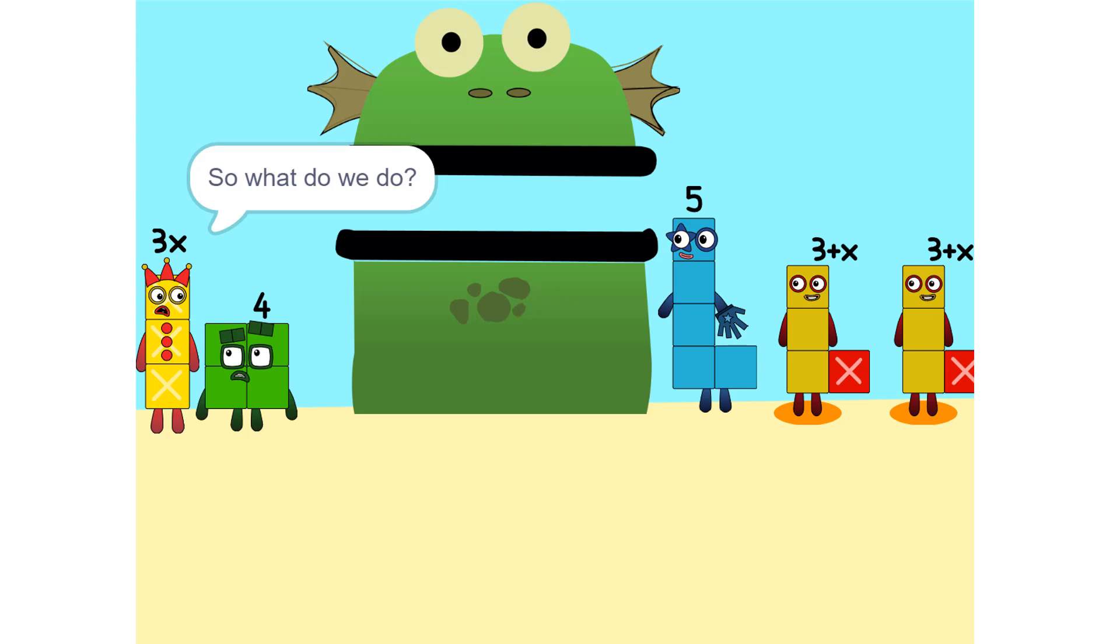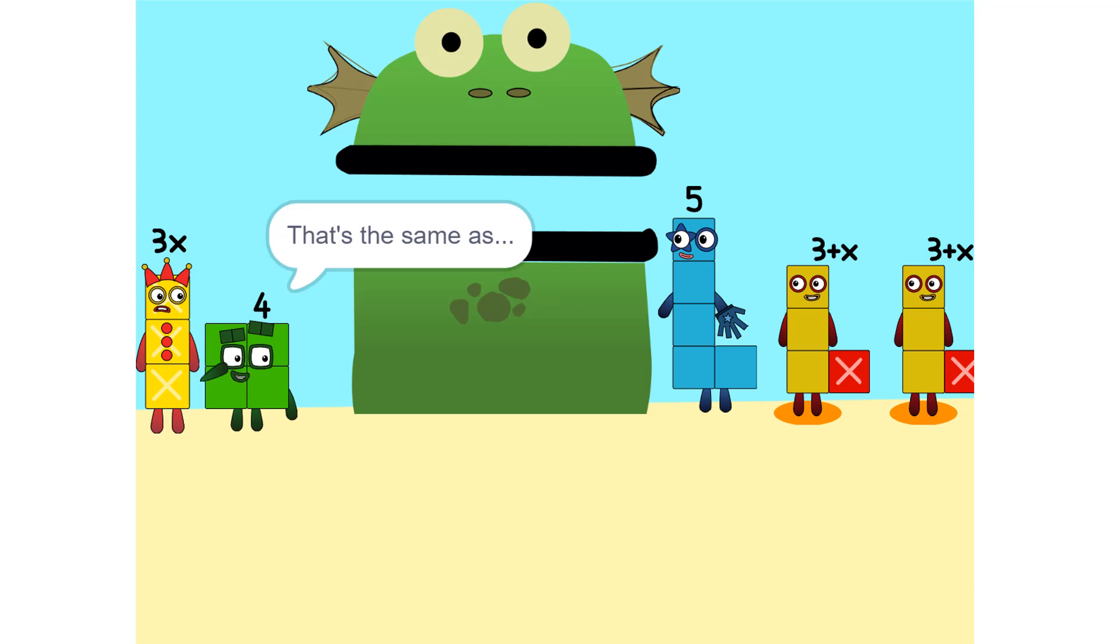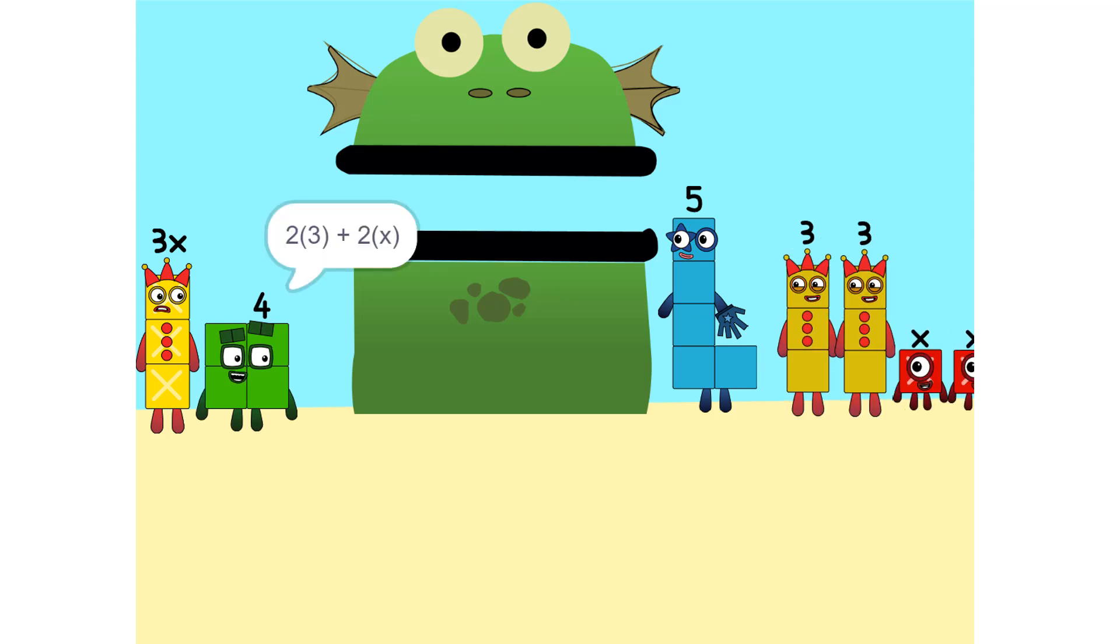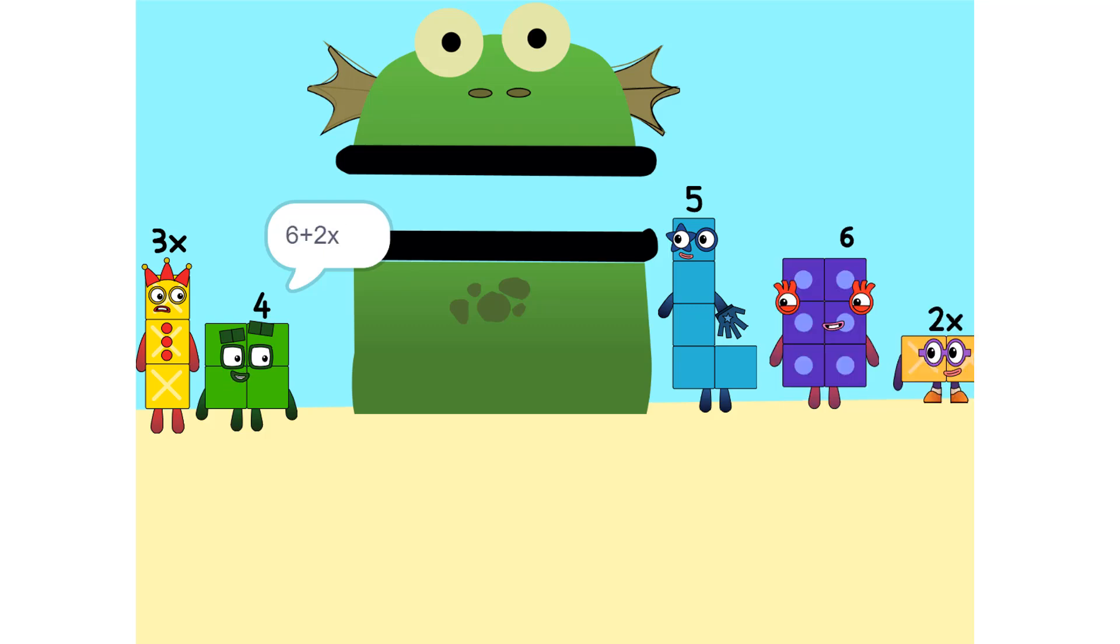So what do we do? Okay, see the 2 times 3 plus X? That's the same as 2 times 3 plus 2 times X, which is 6 plus 2X.